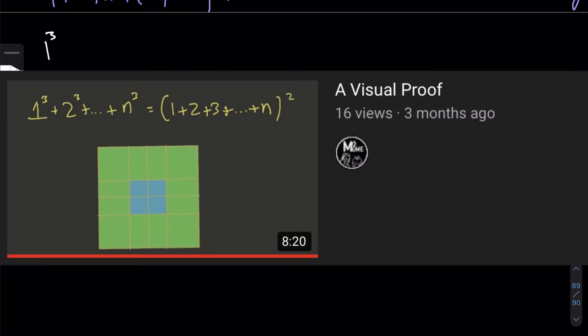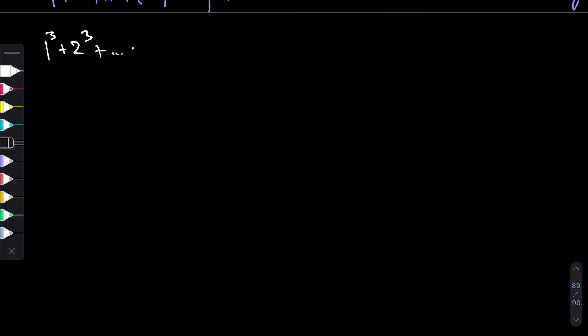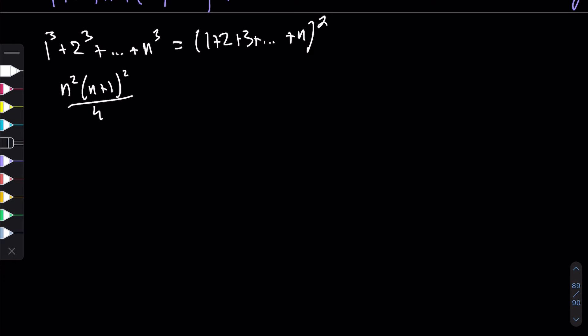Previously we looked at the statement that 1³ + 2³ + ... + n³ is always equal to (1 + 2 + 3 + ... + n)², because both sides boil down to the same formula: n²(n+1)²/4, which equals [n(n+1)/2]². That's what we've already covered.